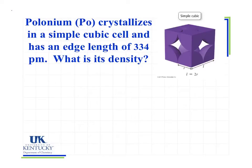Let's look at another example of how we can do calculations with information about a unit cell. Polonium crystallizes in a simple cubic cell and has an edge length of 334 picometers. What is its density?